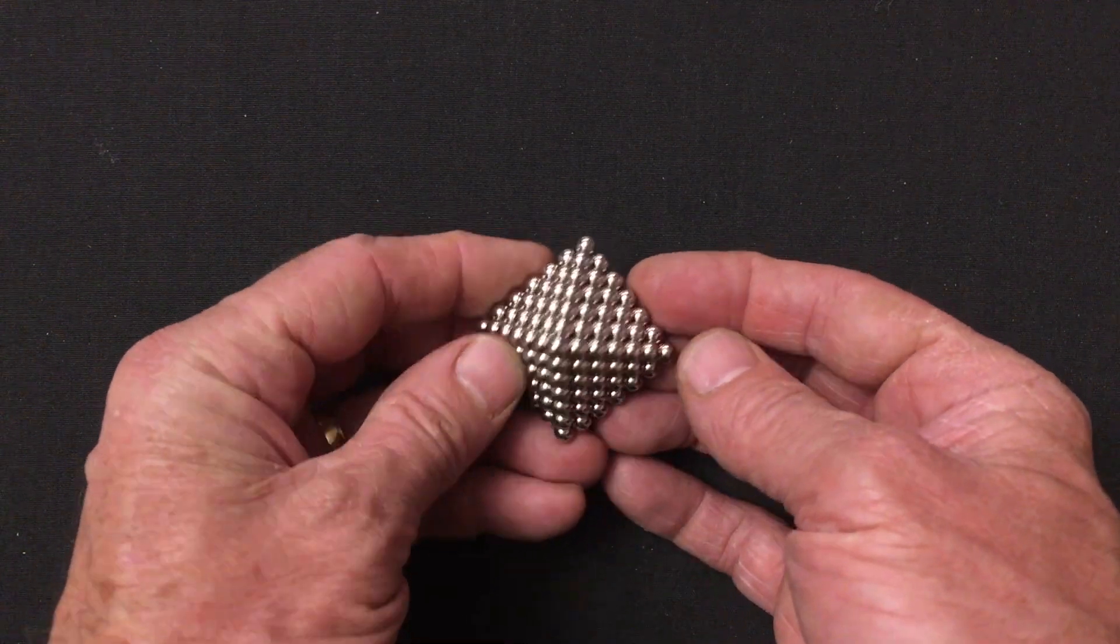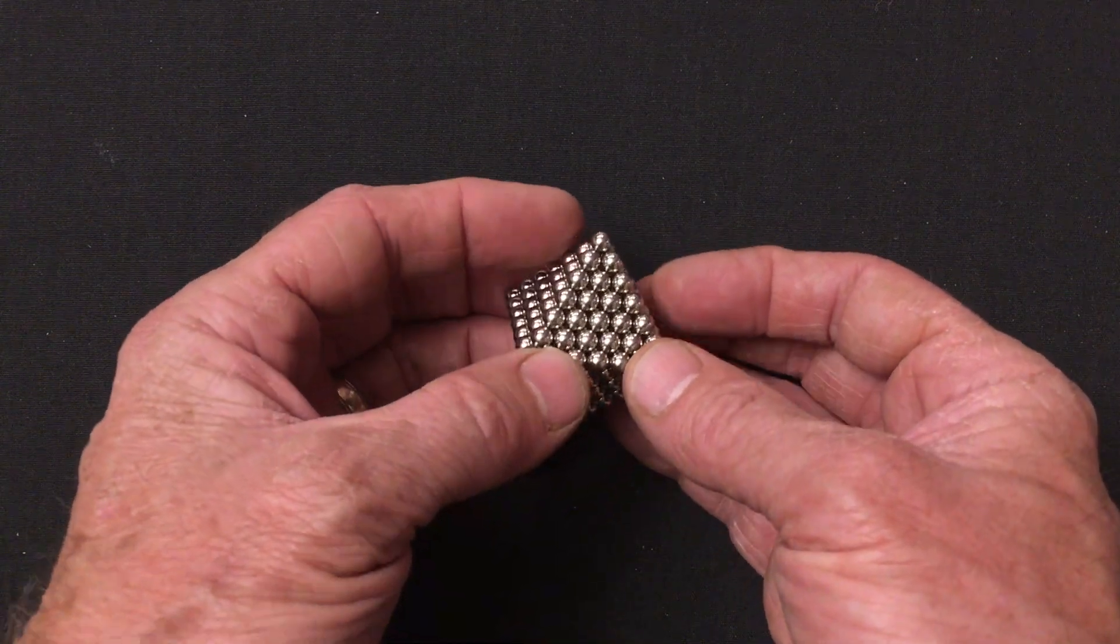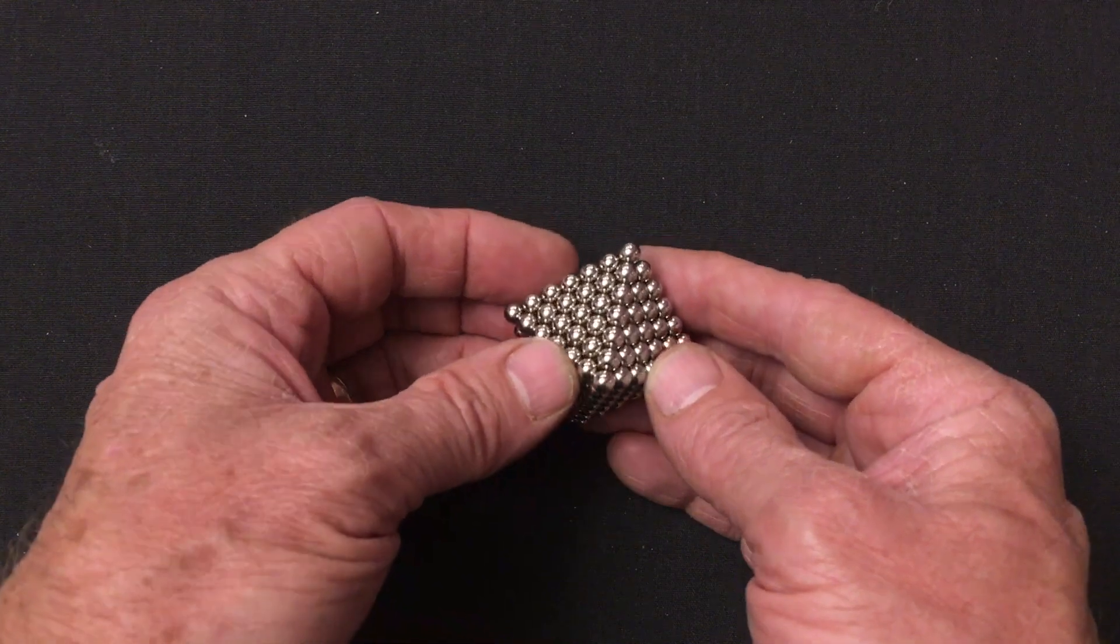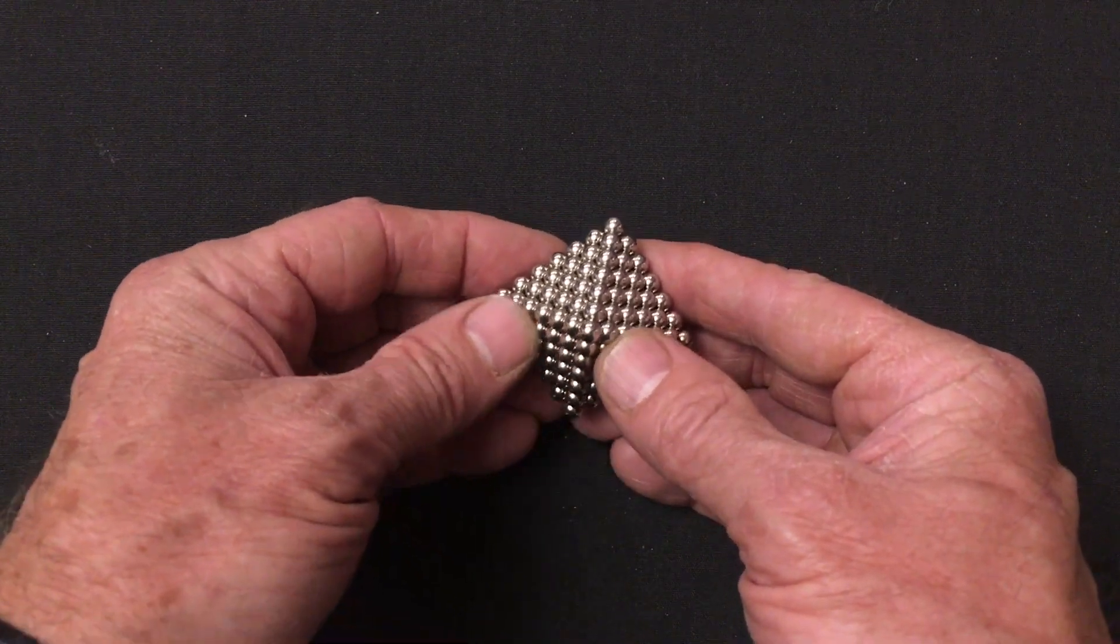It can be built with 212 Zen magnets so you can build it with just a single set of Zen magnets. It's a particularly beautiful but simple shape to build.